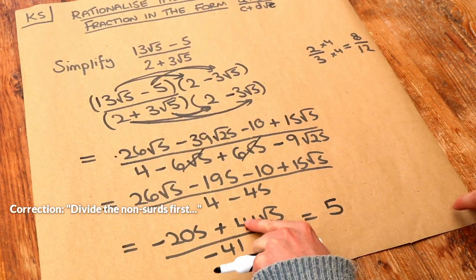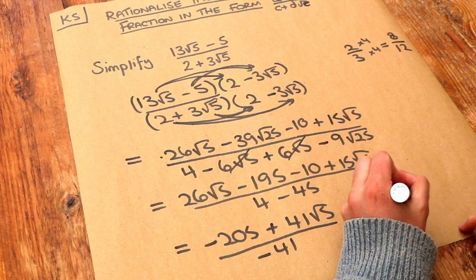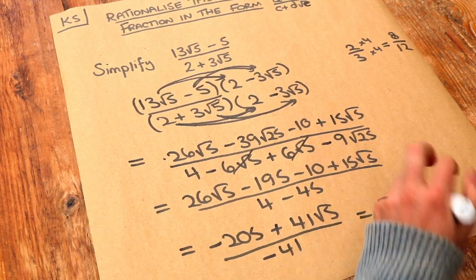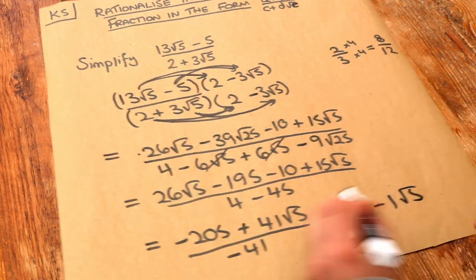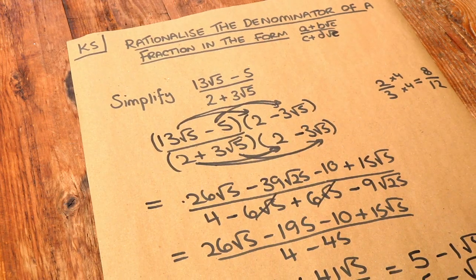And if you divide 41 lots of root 5 by minus 41, remember how we divide surds? We multiply the non-surds first. So 41 divided by minus 41 is minus 1, and then we've still got that root 5 there. So we get that. Or we could write that as just 5 minus root 5. So that is the final answer.